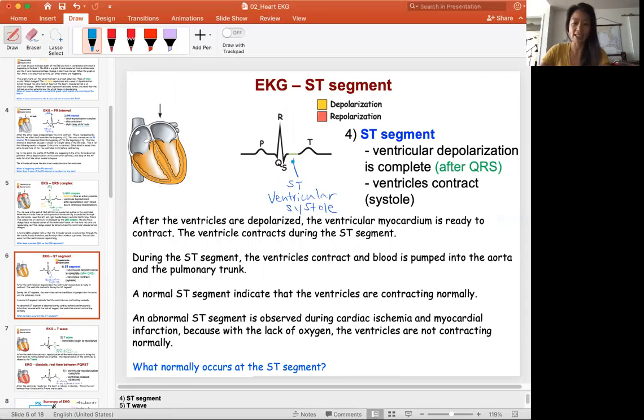We're looking at the ST segment, and the ST is when you see the ventricles pumping blood out of the heart. This is happening right here in this highlighted region—ventricular systole.